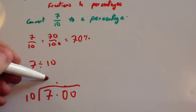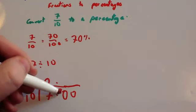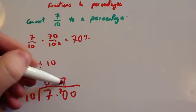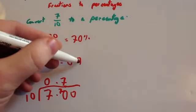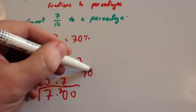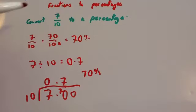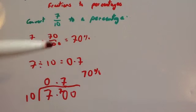So 10 into 7 doesn't go, and the 7 is a remainder. 10 into 70 goes 7 times. So 7 divided by 10 is 0.7. If we times this 0.7 by 100, we would then get that to be 70%. So both methods change the 7 tenths to a percentage.